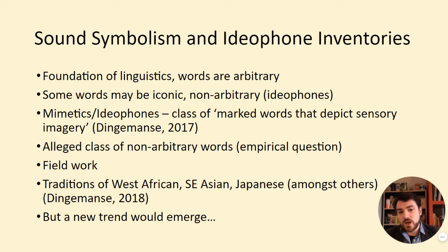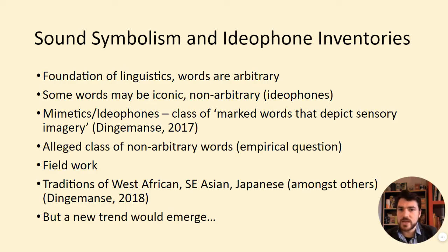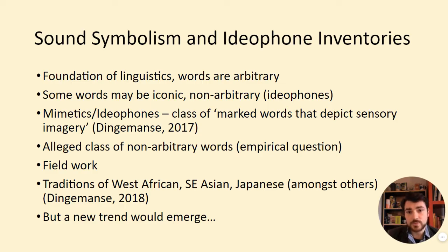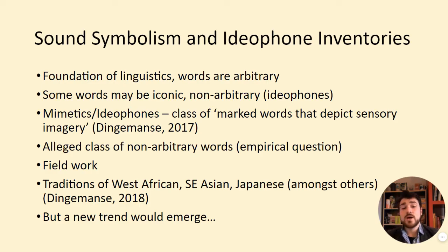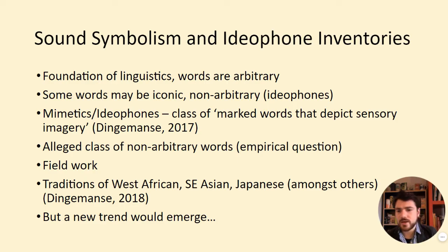These are an alleged class of non-arbitrary, iconic words that exist in many world languages. They've been identified through extensive fieldwork — introspective work in Japan asking 'what's going on here,' but also fieldwork conducted in many languages of sub-Saharan Africa, Southeast Asia, and South America. Different traditions describe them differently, but it boils down to a similar class of words we can identify as mimetics or ideophones. And then a new trend would emerge.